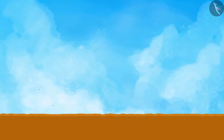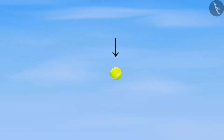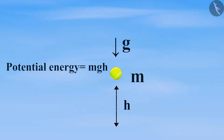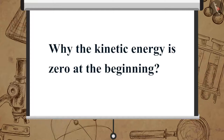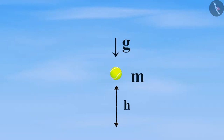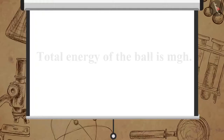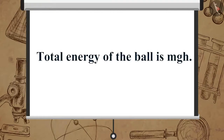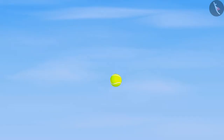Now, let us perform a simple activity to understand the Law of Conservation of Energy. Suppose a ball of mass M undergoes free fall from a height H. At the start of the fall, the potential energy of the ball is equal to MGH and the kinetic energy is equal to zero, because the ball has no velocity in the beginning. Thus, the total energy of the ball is MGH. As the ball begins to fall, the potential energy is converted into kinetic energy.